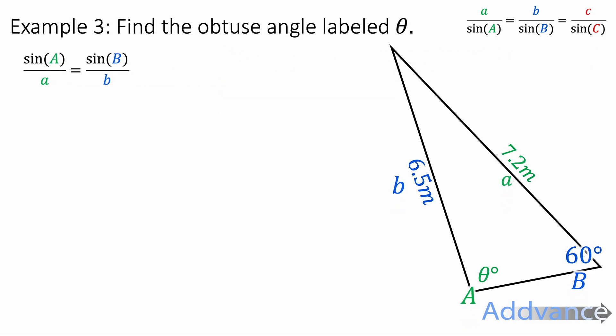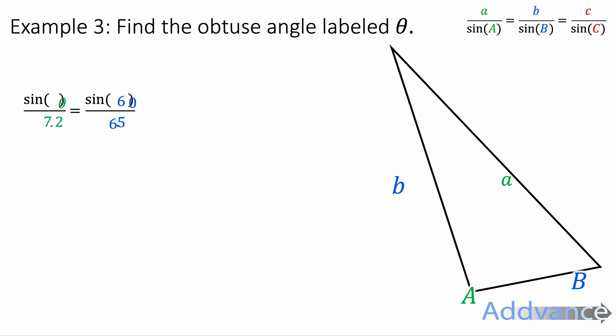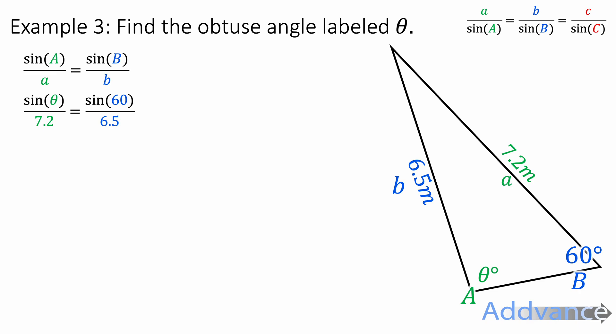Sine A over a equals sine B over b. We're trying to find angles here, so we use the version for finding angles where the angles are on top of the equation. Substituting the numbers in, we get sine theta over 7.2 equals sine 60 over 6.5.